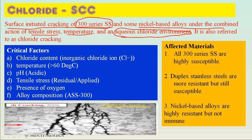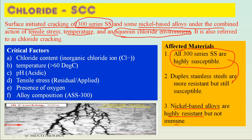What are the affected materials for CLSCC? All 300 grade austenitic stainless steels are highly susceptible. Duplex stainless steels are more resistant but still susceptible, and nickel-based alloys are highly resistant but also not immune. So if you want to upgrade, you can go from 300 series to duplex; and if operating at high temperature and high chloride, you may need to proceed further to nickel-based alloys.